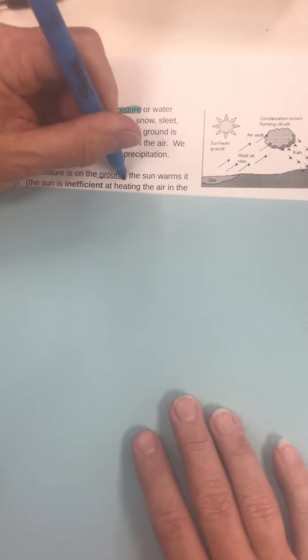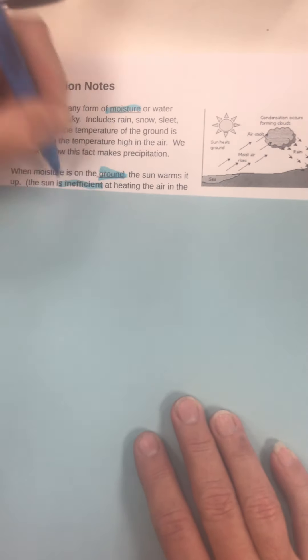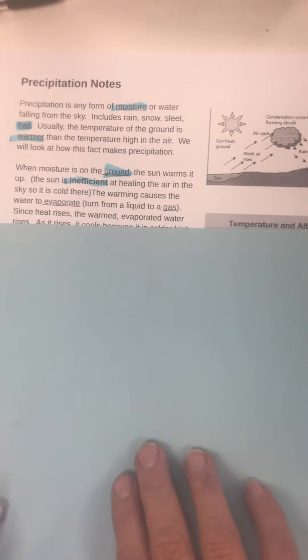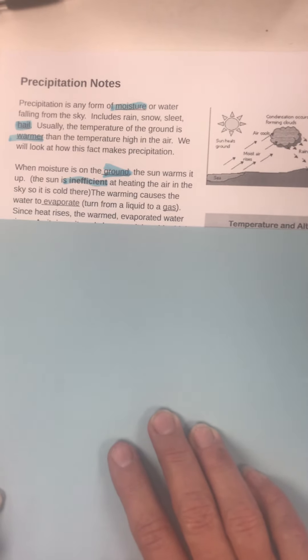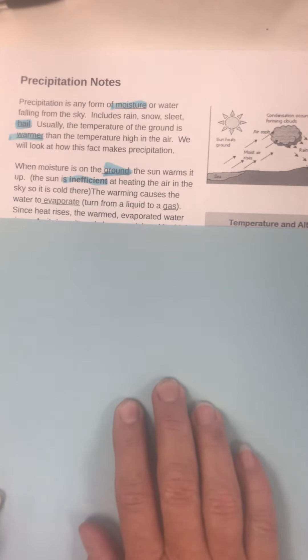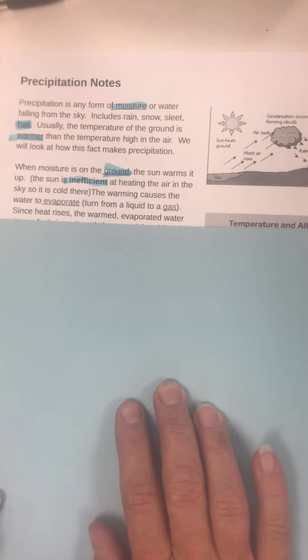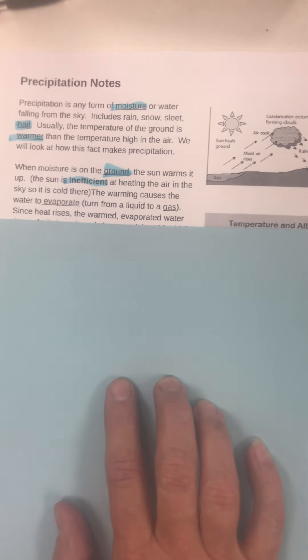When the moisture is on the ground, the sun warms it up. The sun is inefficient at heating air in the sky, so it is cold there. In other words, the sun doesn't heat air well. It heats the ground and things that can soak up the heat, but it doesn't heat air well. It doesn't heat sand well either. The desert is always cold in the winter for the meerkats, because the ground doesn't absorb heat very well.